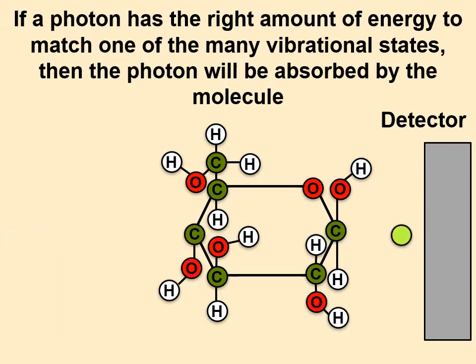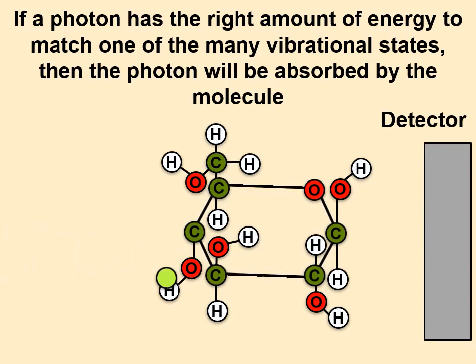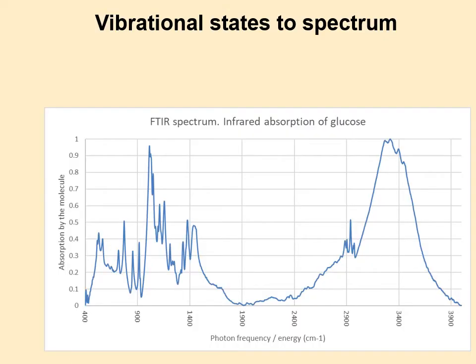At the detector, we're going to look for the photons that are missing — the ones that got absorbed and didn't make it. We can plot that, and that creates a spectrum.